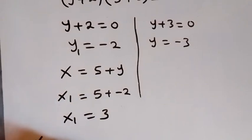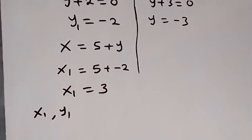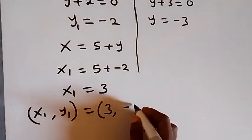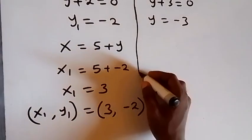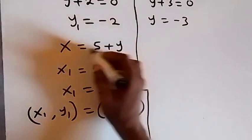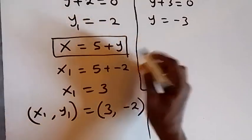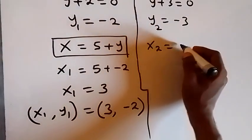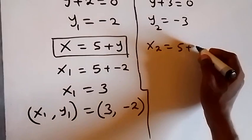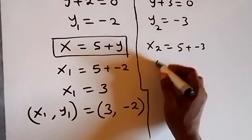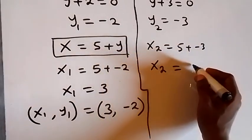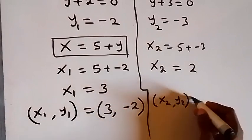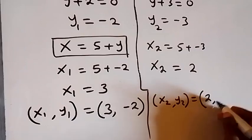So x₁ equals 5 minus 2, that's 3. So we have the first solution pair (x₁, y₁) = (3, −2). And similarly using x equals 5 plus y for y₂ equals minus 3, x₂ equals 5 plus minus 3, that's 5 minus 3, so x₂ equals 2. So we have the second solution pair (x₂, y₂) = (2, −3).